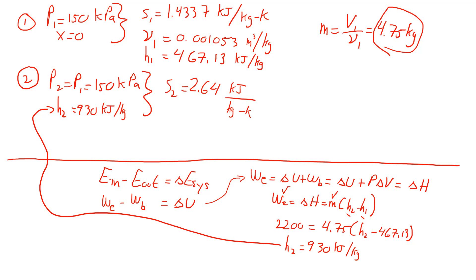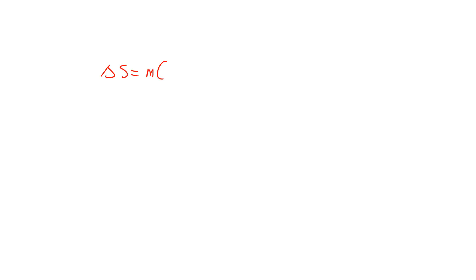With all those knowns, we go back to the second law analysis to find the entropy change: mass times (S2 − S1). Plugging in the numbers, we end up with 5.72 kJ/K.